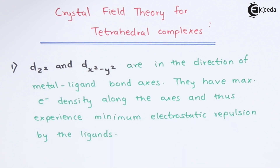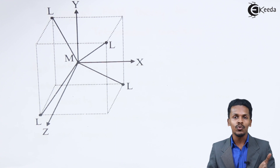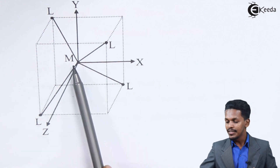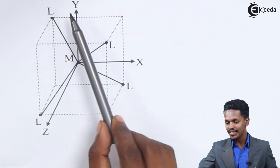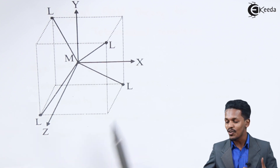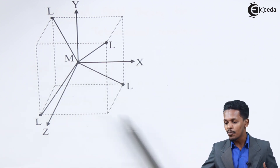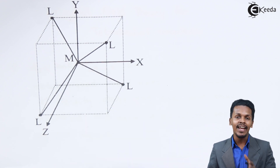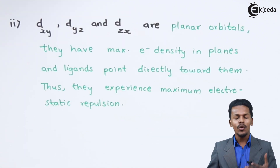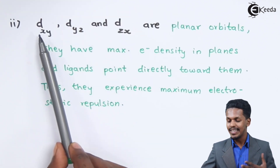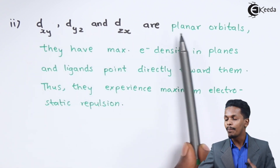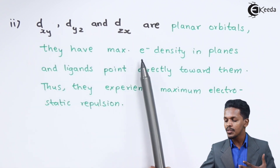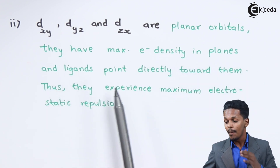Since dz² and dx²-y² have electron density more along the x, y, and z axes, but the ligands are approaching between the axes rather than along them, these orbitals experience less or minimum force. The other orbitals — dxy, dyz, and dzx — are planar orbitals with maximum electron density in the planes, and ligands point directly toward them.